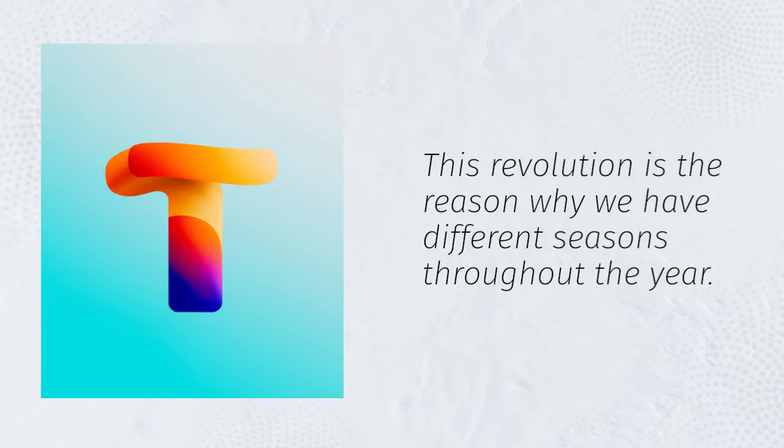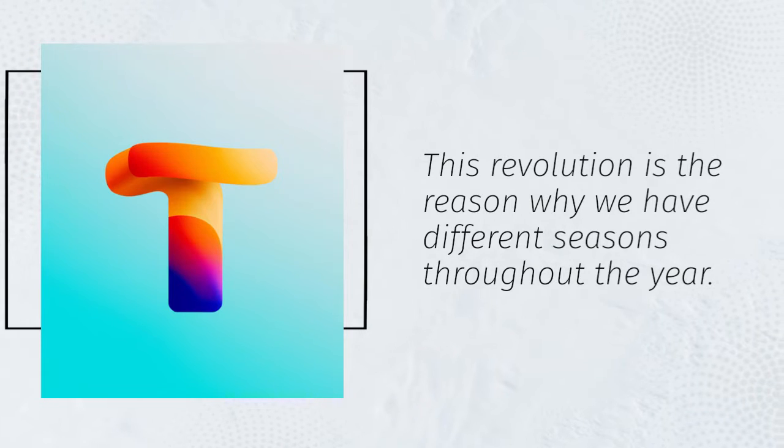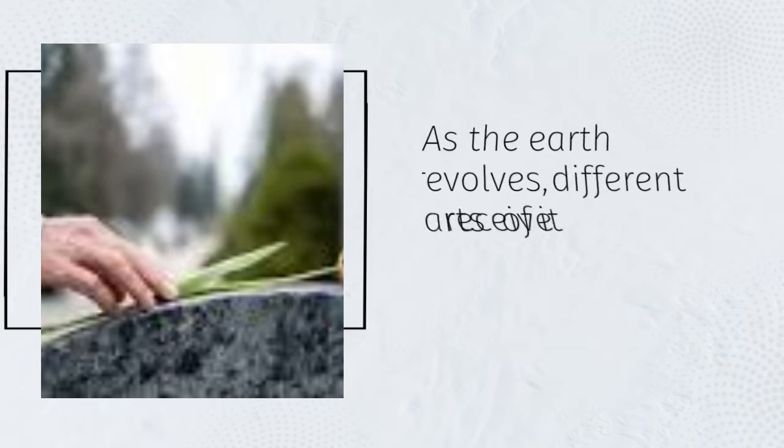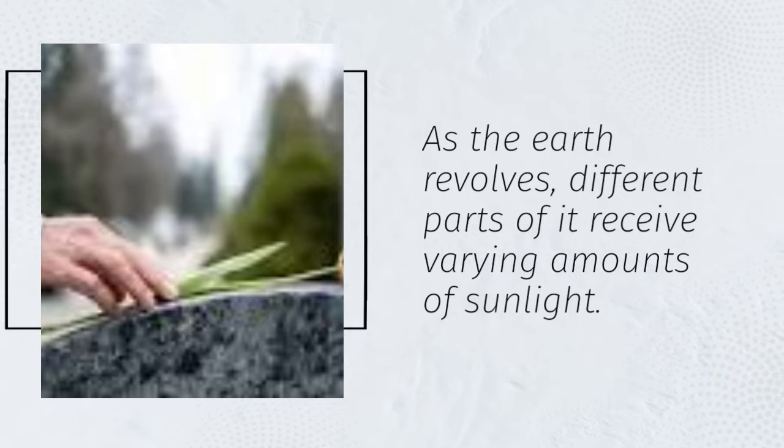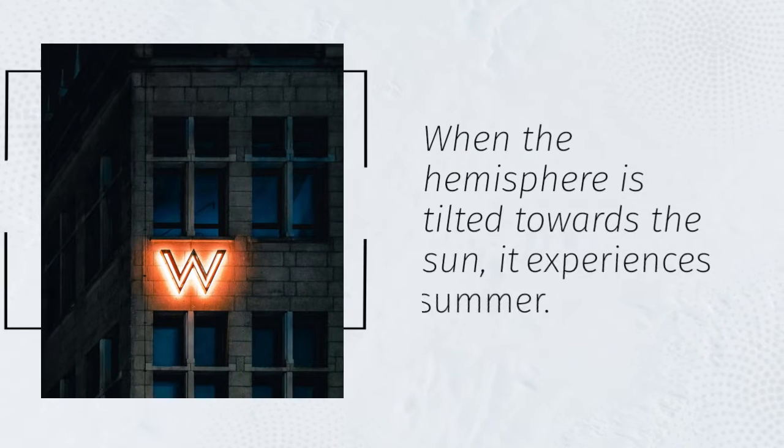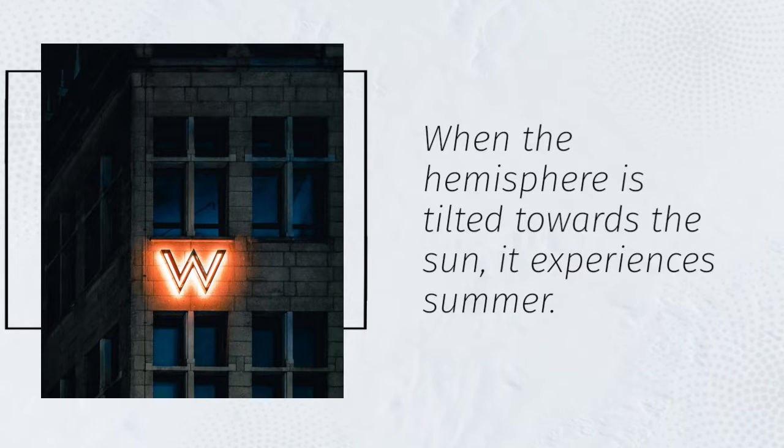This revolution is the reason why we have different seasons throughout the year. As the Earth revolves, different parts of it receive varying amounts of sunlight. When the hemisphere is tilted towards the Sun, it experiences summer.